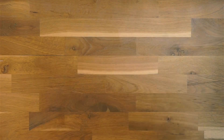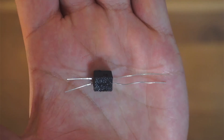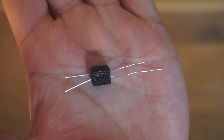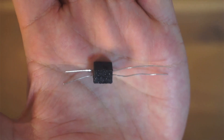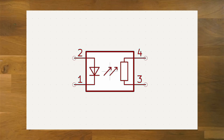Hey everyone, in this video we're going to take a look at these tiny little black boxes also called vactorols. A vactorol is an electronic component consisting of a regular LED and a light-dependent resistor. What makes a vactorol unique compared to a regular transistor is that they don't work in a simple binary on/off fashion — instead, they respond gradually to voltage, creating a smoother and more musical response.